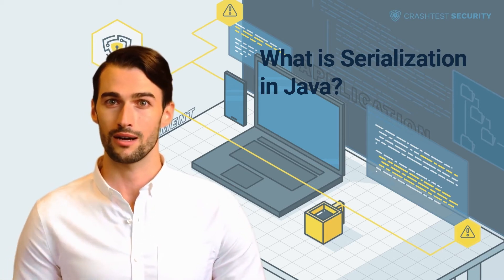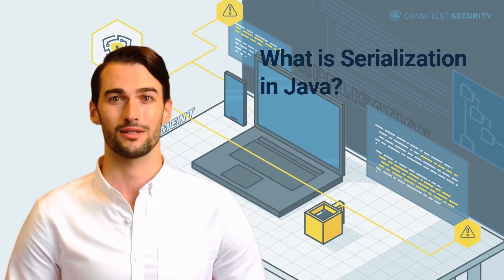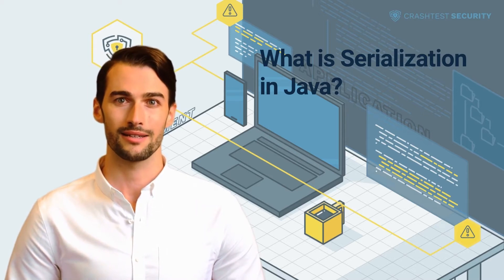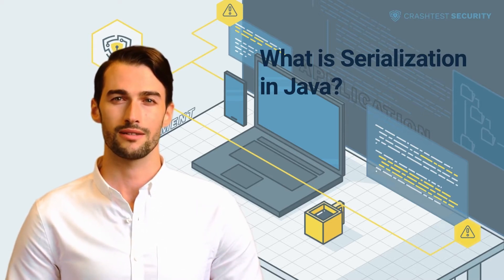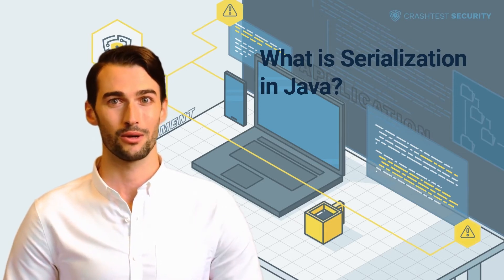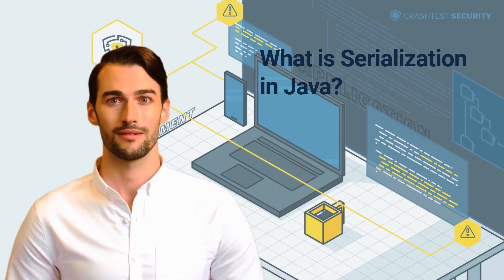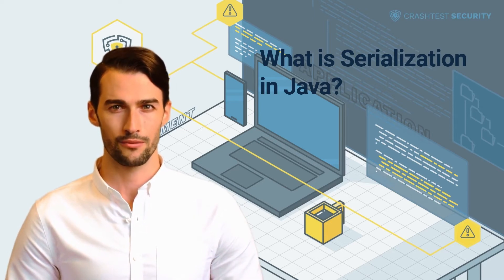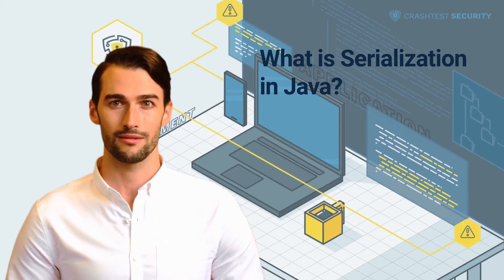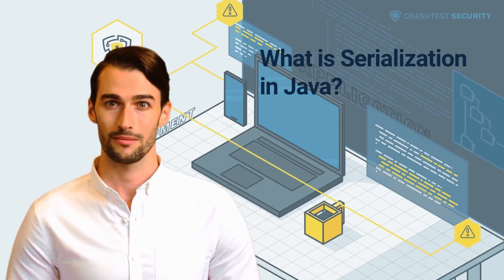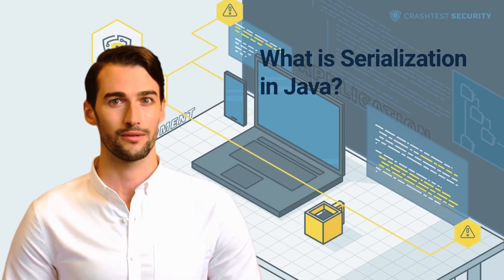The Serializable interface implements a three-step process: 1. Writing metadata information of the object's class. 2. Recursively writing out this class structure's description until it locates java.lang.Object. 3. Recursively writing out the data associated with the object stream, from the highest serializable fields to the lowest.